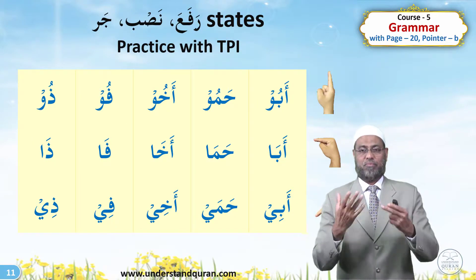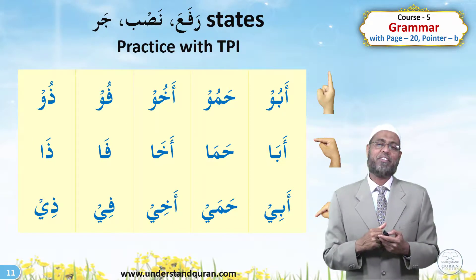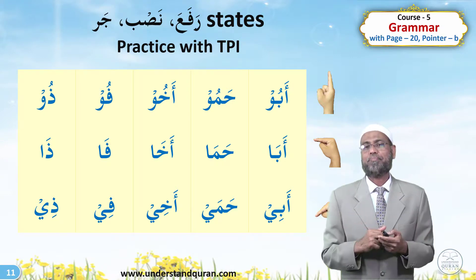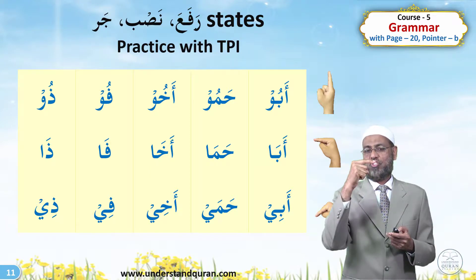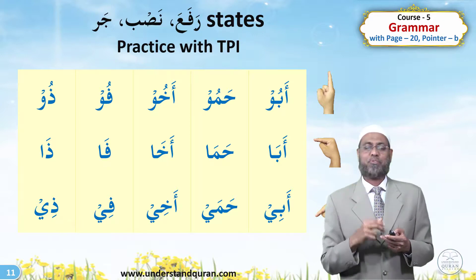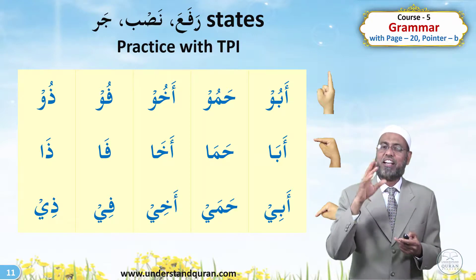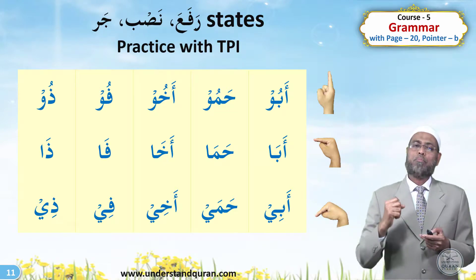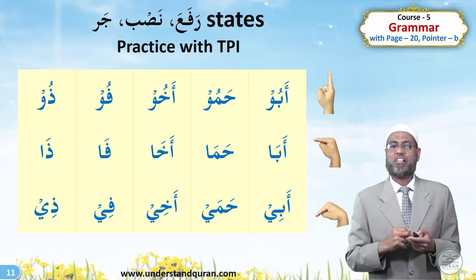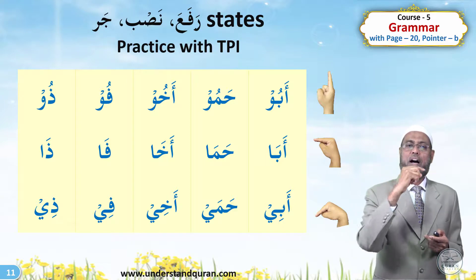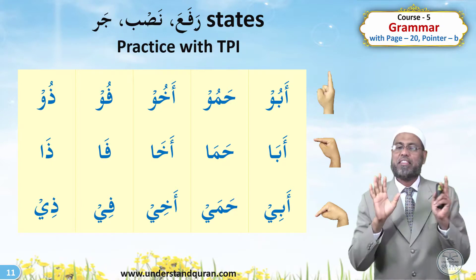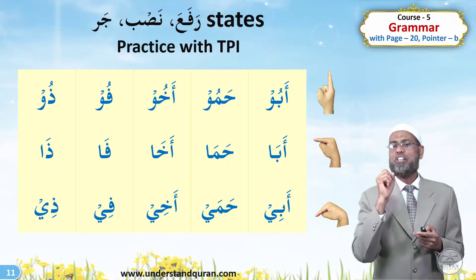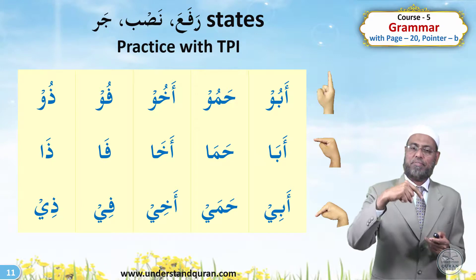Now, what is special about these five nouns? In Rafa, Nasab, and Jar states, they change their endings. Abu, Hamu, Akhu, Fu, Thu are the original Rafa states. When affected by Nasab, they become Aba, Hama, Akha, Fa, Tha. And after Jar, they become Abi, Hami, Akhi, Fi, Dhi. So original is Abu, Nasab is Aba, and after a preposition, Abi.